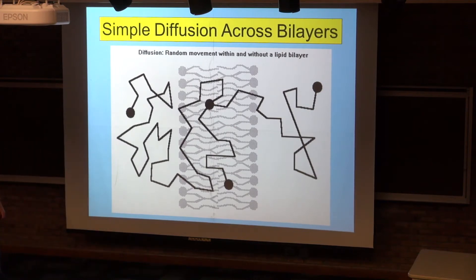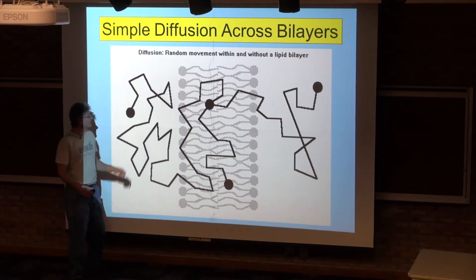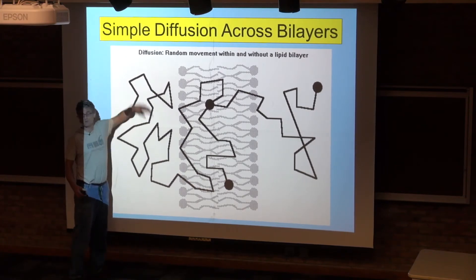So the particle is the round thing and the lines are the path it's taking. This is just showing random diffusion.